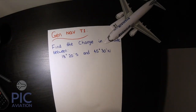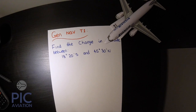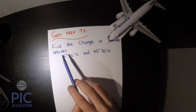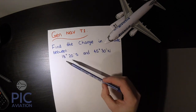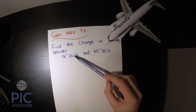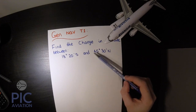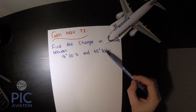Hello and welcome to PIC Aviation, ATPL Tuition, GenNav Tutorial 1. Parallels of latitude are described by their angle as measured from the centre of the Earth above or below the equator. Here we have a calculation pertaining to the change in latitude between these two positions: 18 degrees 20 minutes south and 45 degrees 30 minutes north.